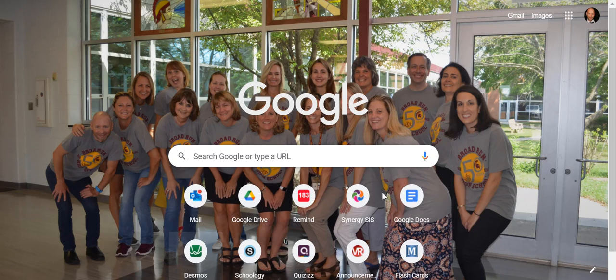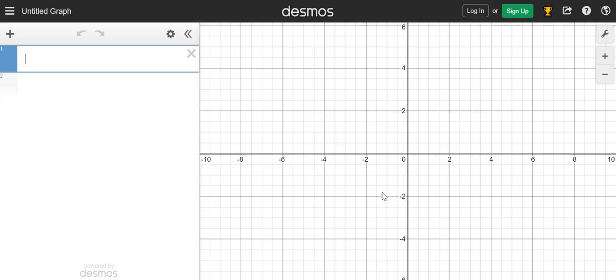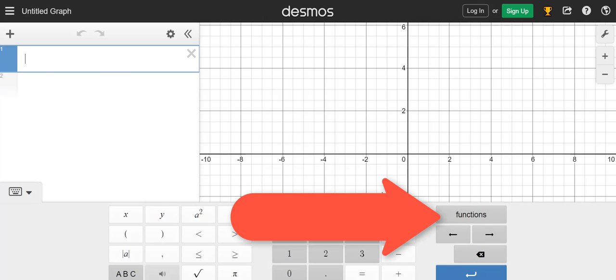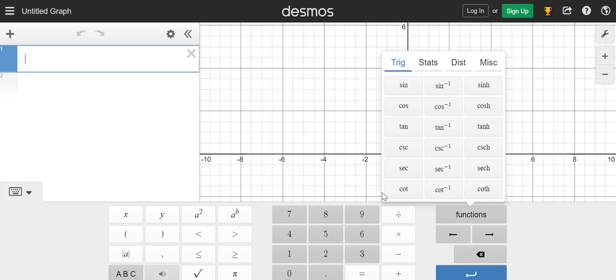So the first thing you're going to want to do is go to the Desmos graphing calculator. Now in here, in the lower left-hand corner, you'll see the little keyboard. So you're going to select the keyboard and then go all the way over to where you see functions. When you select that,